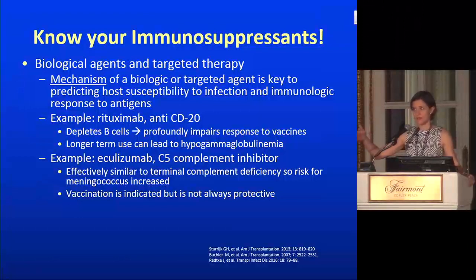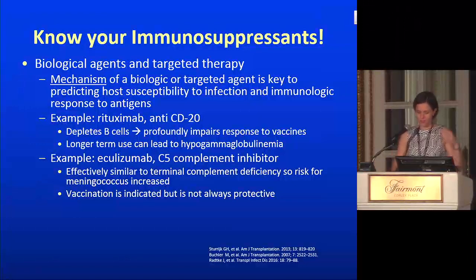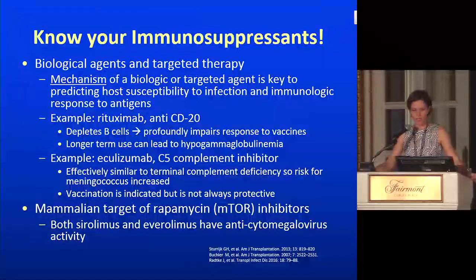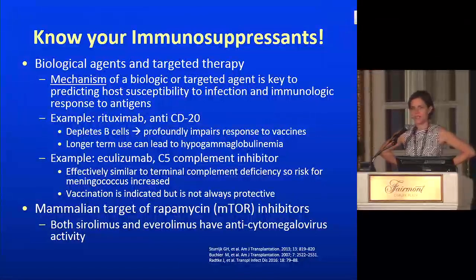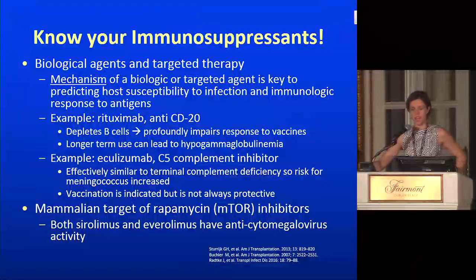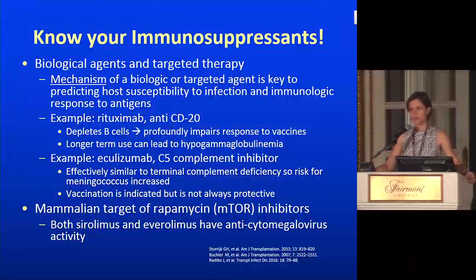If somebody's been treated with rituximab and they then get eculizumab, look out — the vaccine won't protect them at all if given after rituximab. On a positive note, mTOR inhibitors like sirolimus or everolimus have interesting antiviral properties — patients on these drugs have less CMV reactivation than people on alternative regimens. At my institution, sirolimus is used for stem cell transplant patients with measurable impact. Additionally, mTOR inhibitors can help with Kaposi sarcoma — switching patients to these agents can lead to regression of the Kaposi sarcoma.